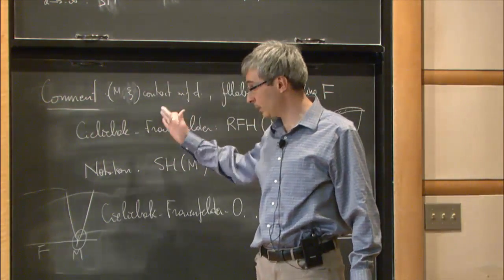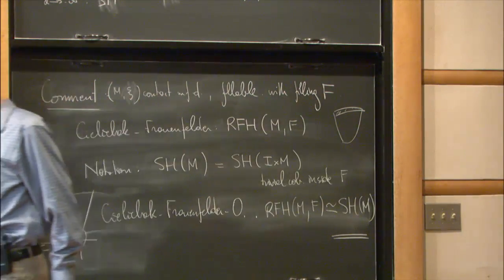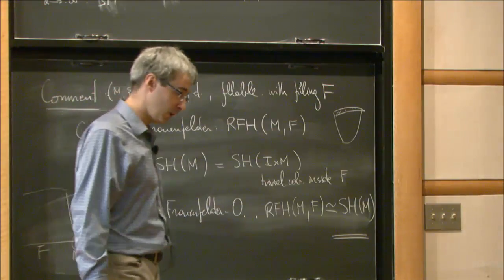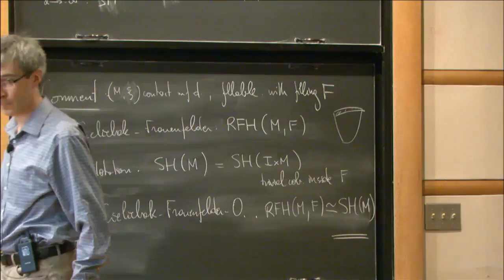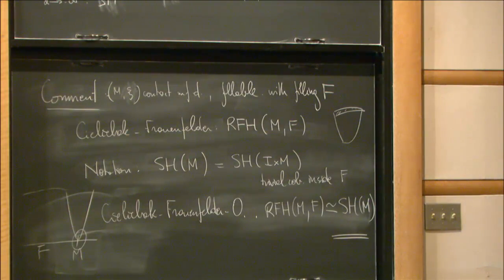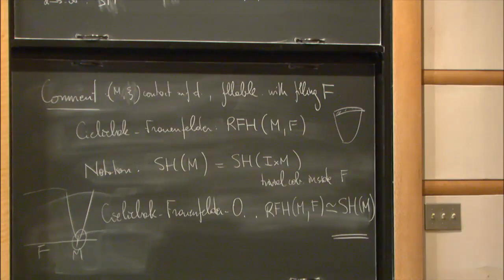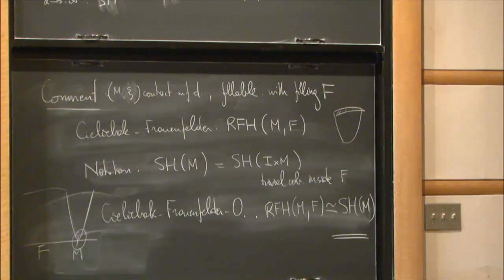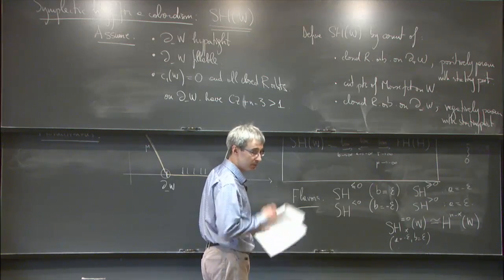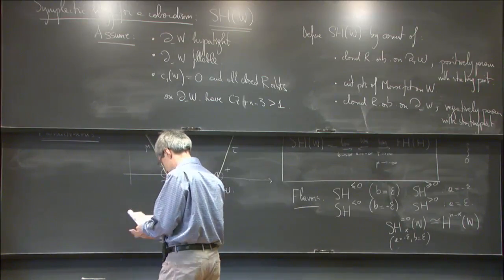There should also be a purely pseudo-holomorphic curve SFT-type formulation, which would be parallel to the translation from symplectic homology to a non-equivariant version of contact homology — and although this is not written down, one can definitely perform such a thing.